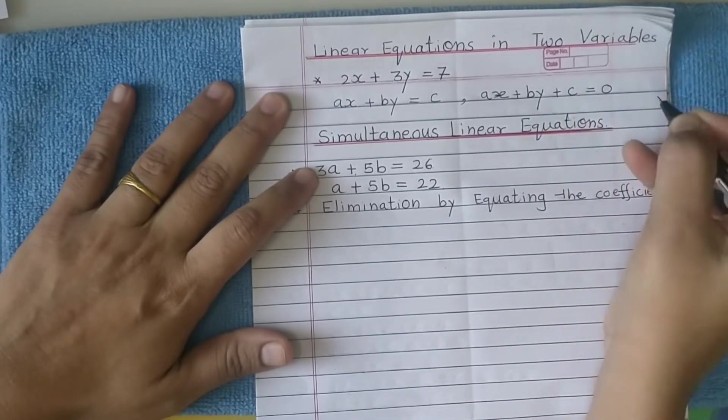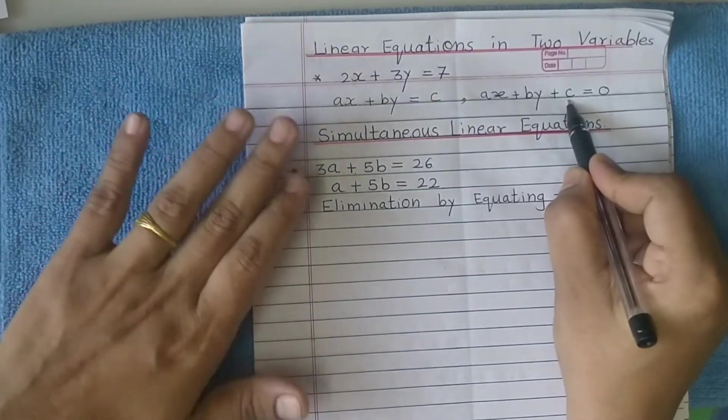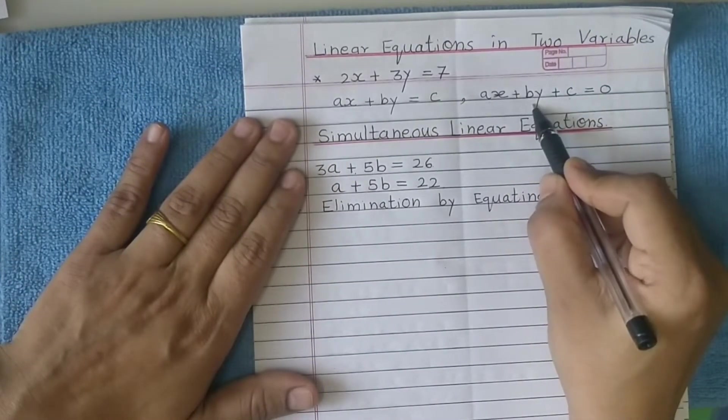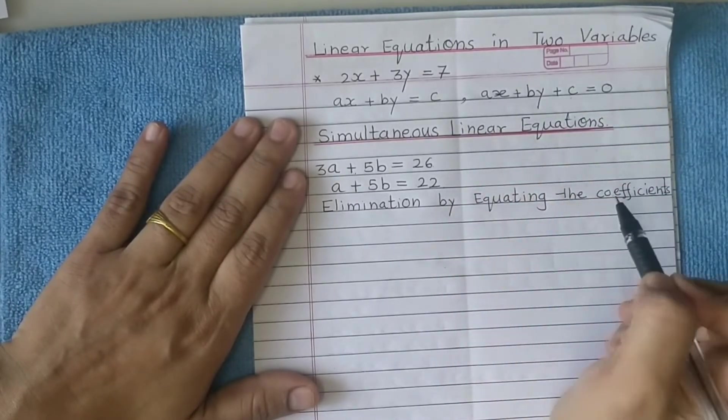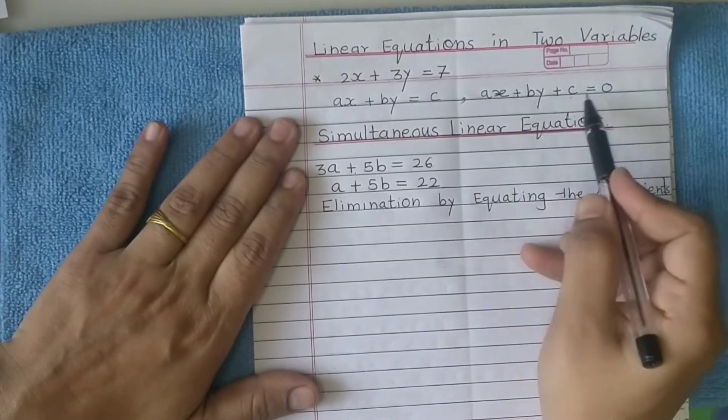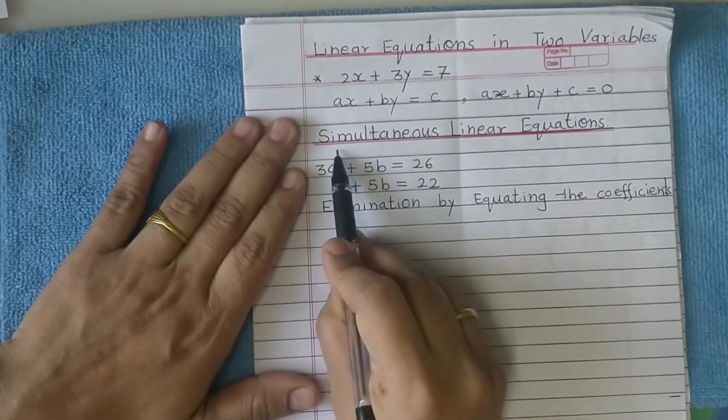Where a, b, c are real numbers and a and b is not equal to 0. Neither a nor b can be zero, or else it will become an equation in one variable.